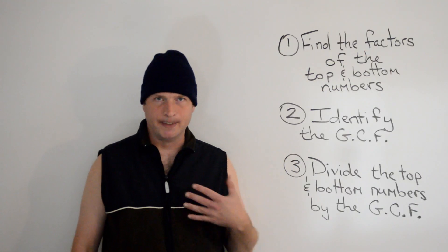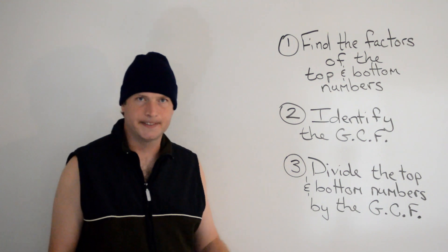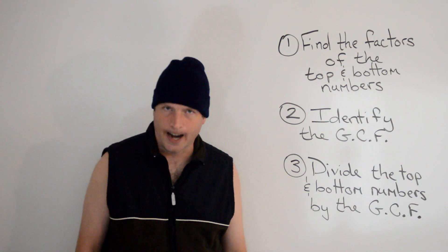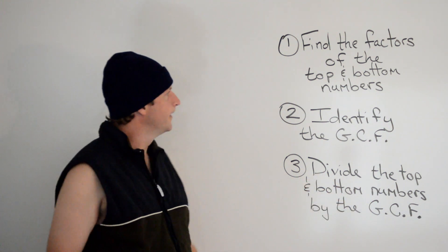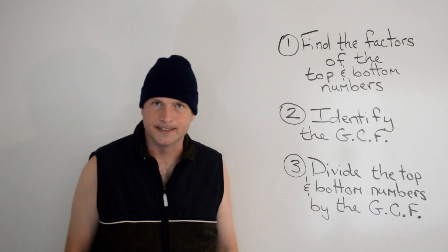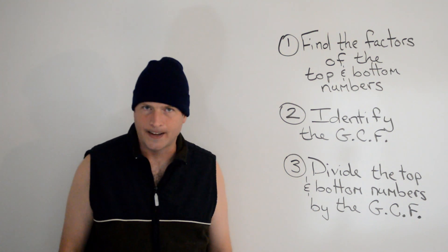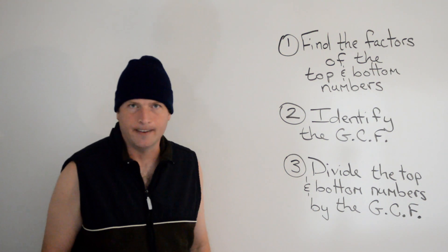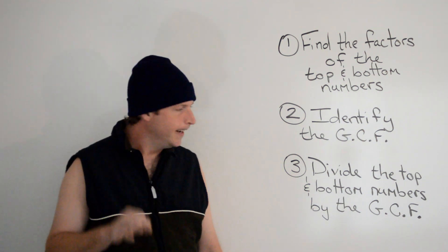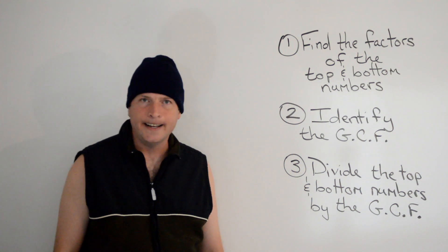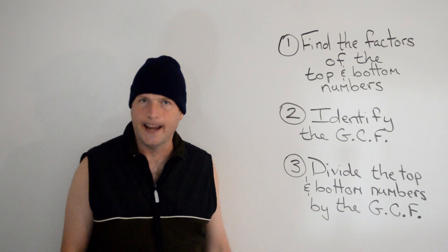Here are 3 easy steps to simplify fractions. Step 1: find the factors of the top and bottom numbers. Step 2: identify the GCF, or greatest common factor. Step 3: divide the top and bottom numbers by the GCF.